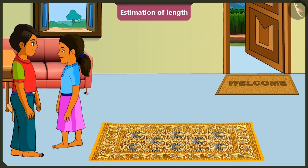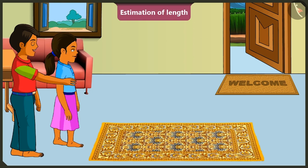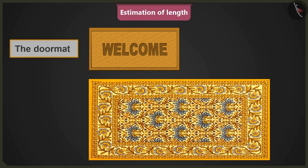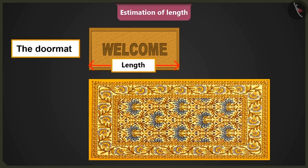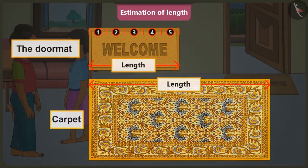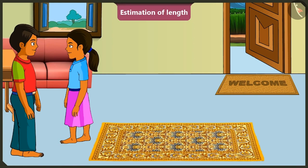Okay, Mintu, now tell me, what will be the length of the door mat that is placed there? If the length of the door mat placed near the door is half that of this carpet, then the approximate length of the mat should be equal to five foot spans. Rightly said, Mintu.